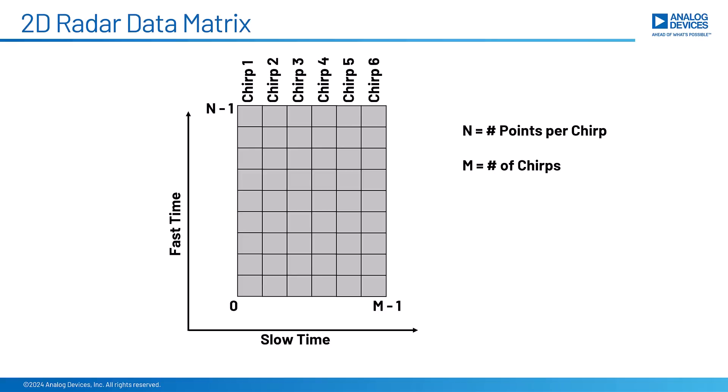But on the y-axis, fast time, those data points are all separated by the sampling rate of the data converter. So that'll be something like microseconds or less. That's why we call them fast time and slow time. So hopefully that is clear. This is all really important to get straight in your head. It basically forms the foundation for all kinds of radar processing.